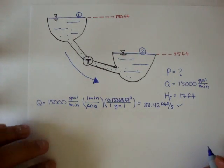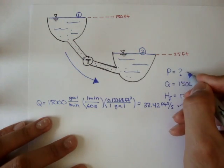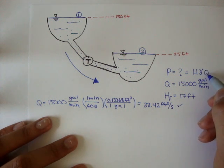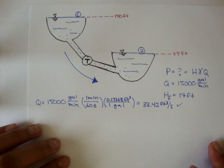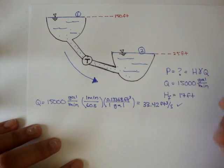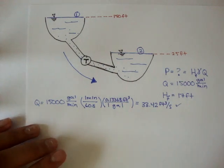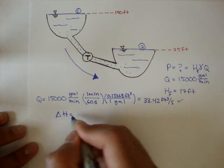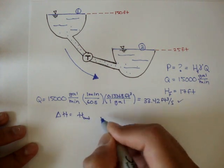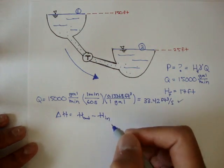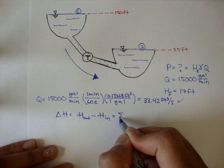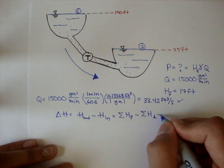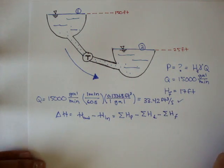They want to know what the power of this turbine is. So remember, power is equal to device transfer head times gamma times Q. And in this case, unlike the other examples, we're looking for the turbine, so we're looking for H sub T. And remember, our other equation, our change in energy head is equal to the energy head out minus the energy head in. And that's equal to the summation of all the pump heads minus the summation of all the turbine heads minus the summation of all the frictional head losses.